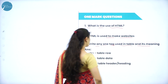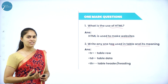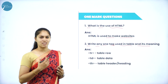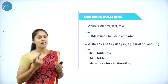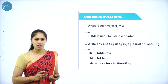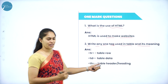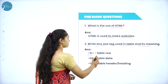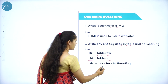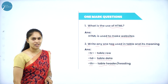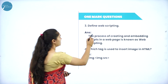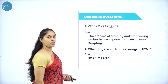Next question: write any one tag used in a table and its meaning. In a table we have table row, table data, and table header. The tags are tr (table row), td (table data), and th (table header or heading). You can write any one of these tags along with its meaning.